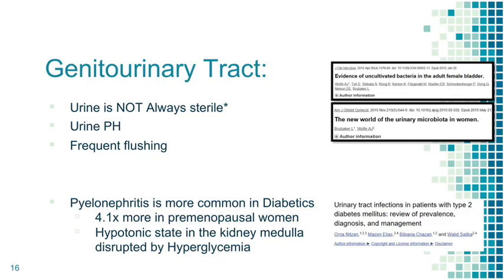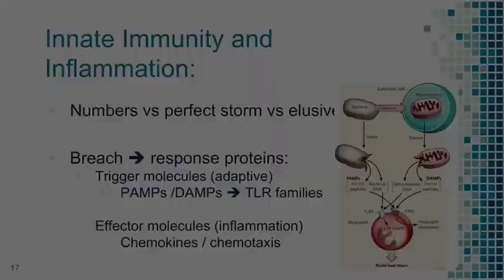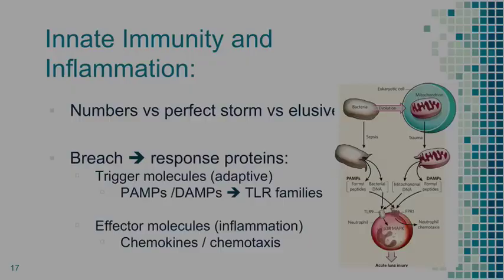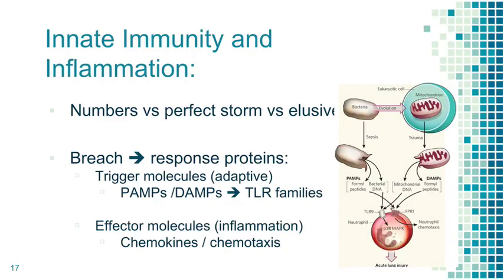In diabetes there's definitely a higher risk of pyelonephritis. It's thought to be because the kidney medulla normally has a hypotonic state, which is a defense mechanism unfavorable for bacteria. In diabetes, you secrete sugar in your urine and that reverses the hypotonic state — that's why there's increased risk.